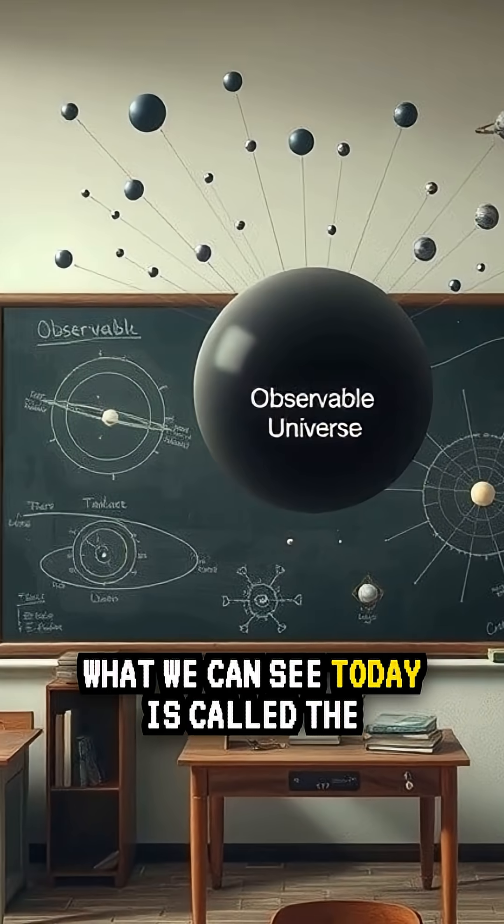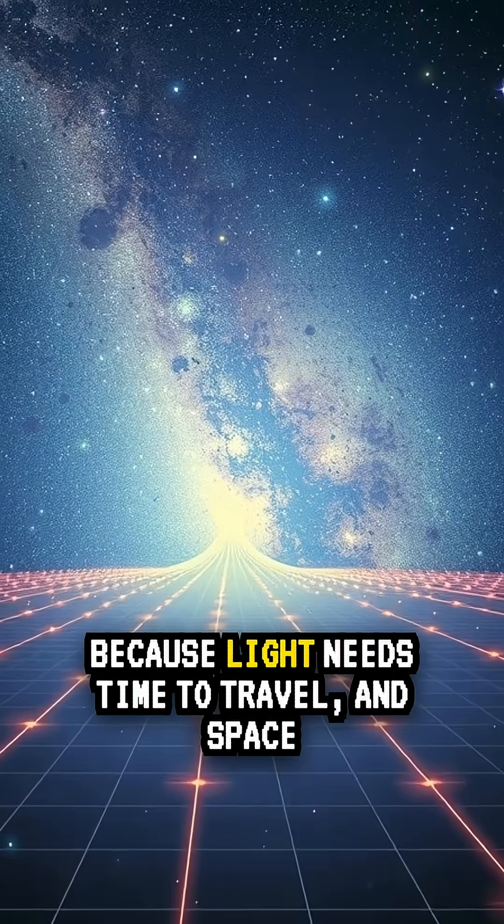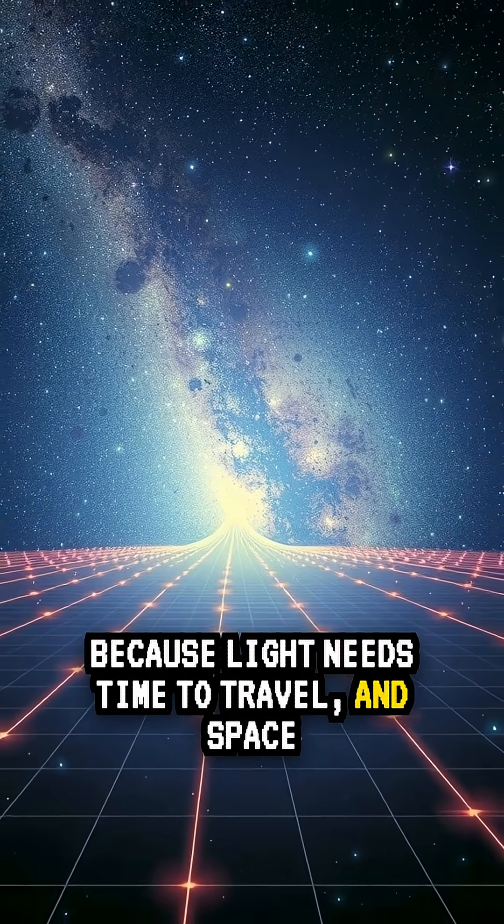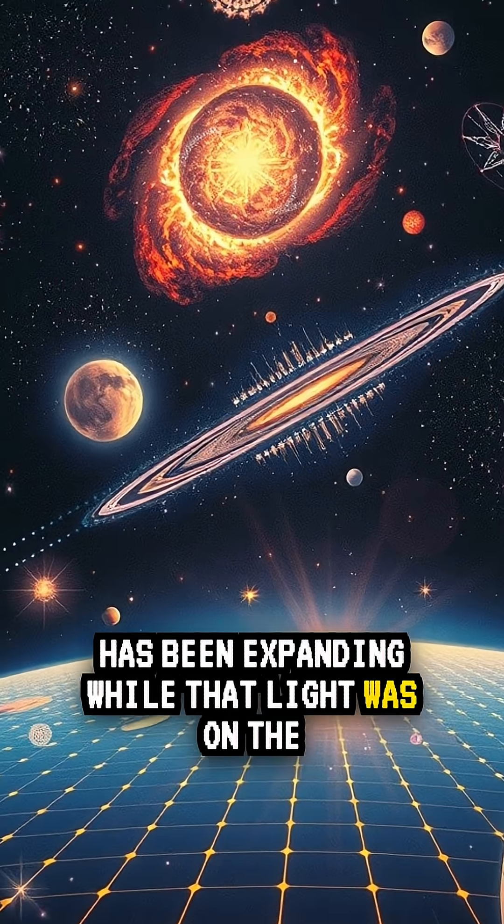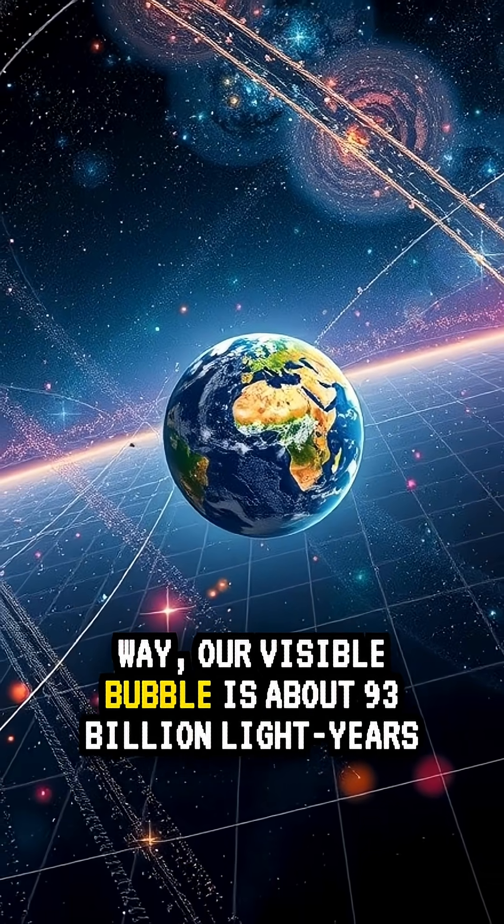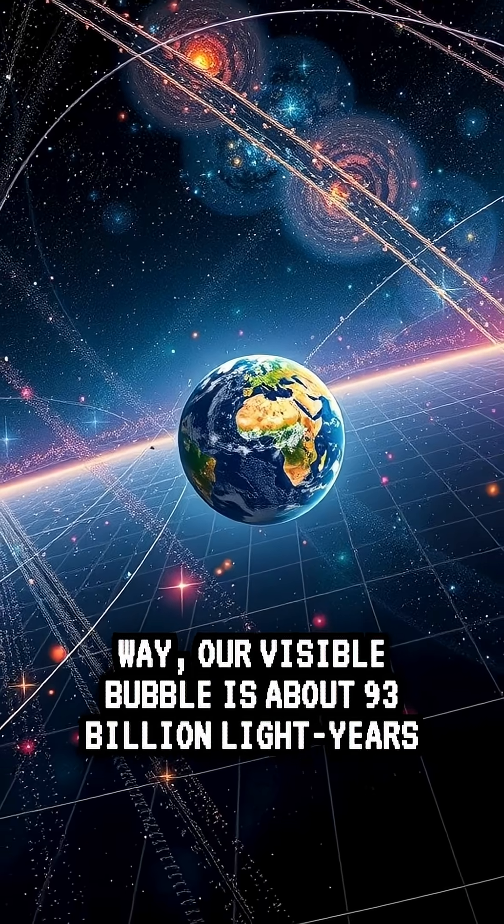What we can see today is called the observable universe. Because light needs time to travel, and space has been expanding while that light was on the way, our visible bubble is about 93 billion light years across.